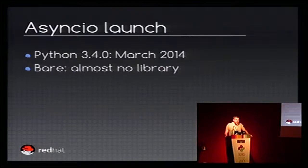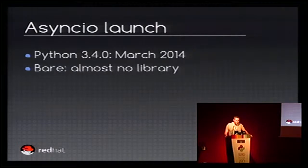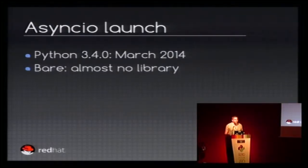For me, the launch of AsyncIO was in March 2014 with the release of Python 3.4. It was the first time it was widely available to users. At that time, it was bare — you had almost no libraries, which means you could write a short hello world, but it was really hard to develop an application on top of AsyncIO, because basically you only had the socket module, so you didn't have HTTP, you didn't have anything.